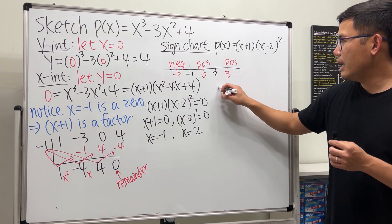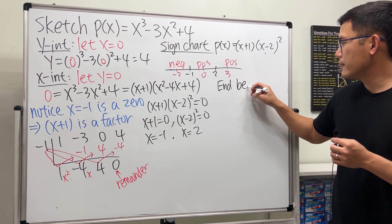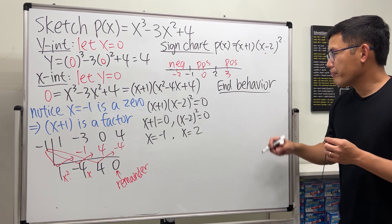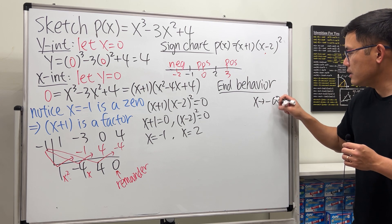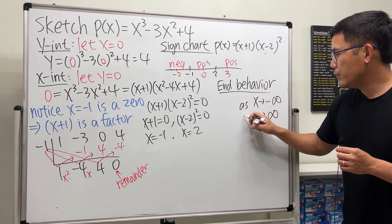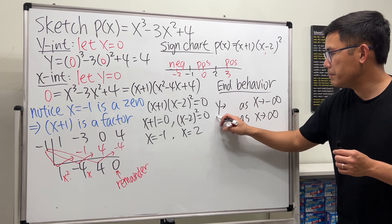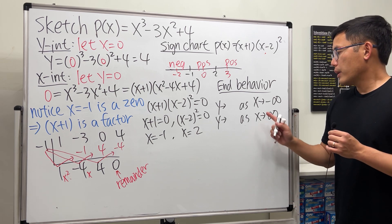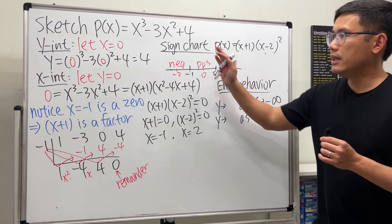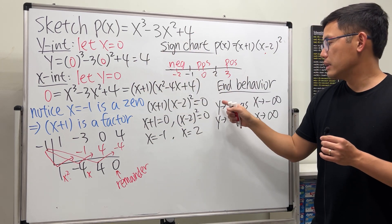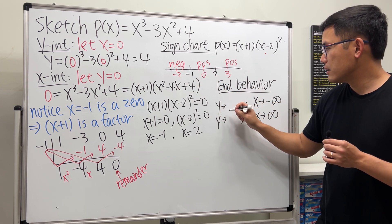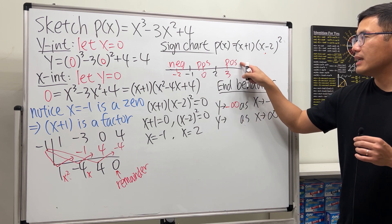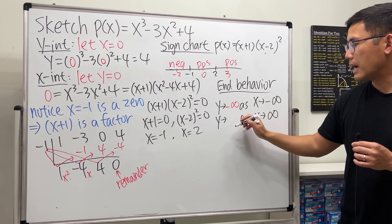Now let's talk about end behavior. We care about two cases: as x approaches negative infinity and as x approaches positive infinity. As x goes to negative infinity (far left), y goes to negative infinity. As x goes to positive infinity (far right), the value is positive, so y goes to positive infinity.